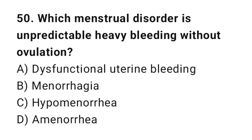Question 50. Which menstrual disorder is unpredictable heavy bleeding without ovulation? The right answer is A: Dysfunctional uterine bleeding.